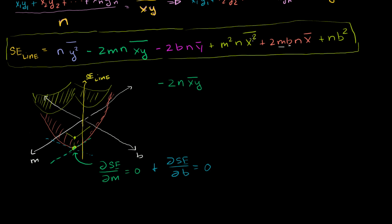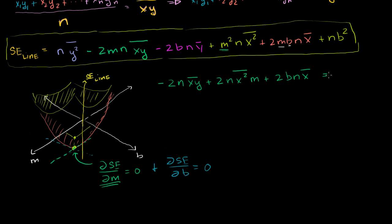This term right over here — we have n times the mean of the x squared times m squared — so taking the partial derivative with respect to m gives us 2 times n times the mean of x squared times m, since the derivative of m² is 2m. Now this next term also has an m in it, so the derivative with respect to m is 2bn times the mean of the x's — it's just the coefficient on that m. The last term is a constant with respect to m, so it vanishes. And we want to set this partial derivative equal to 0.